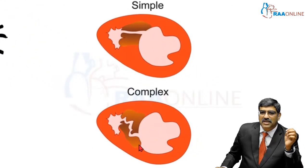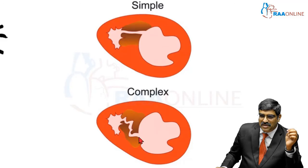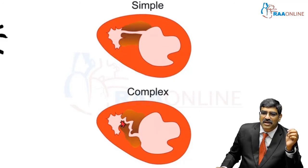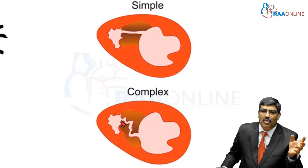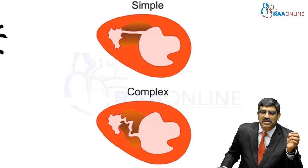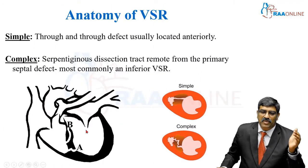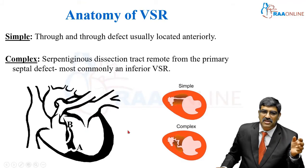Coming to complex VSR, you have a serpentinous dissection tract extending from the primary septal defect. The primary defect starts at one location and ends at a different location. It usually happens in the inferior part of the septum — it is an inferior VSR.